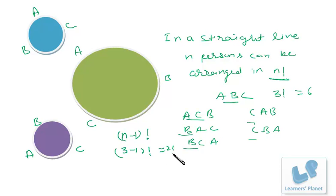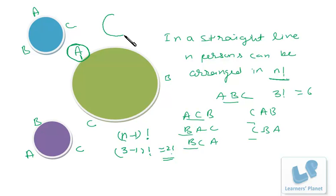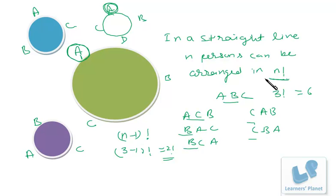How is this formula derived? We fix the position of one person, and the remaining persons are arranged relative to that fixed position. So if A's position is fixed, then B and C — two persons — can be arranged in 2 factorial ways. Similarly, if there are four persons A, B, C, and D around a circle, we fix one person and the remaining three are arranged in 3 factorial ways. So for n people on a line, n factorial arrangements exist, but around a circle it is n minus 1 factorial.